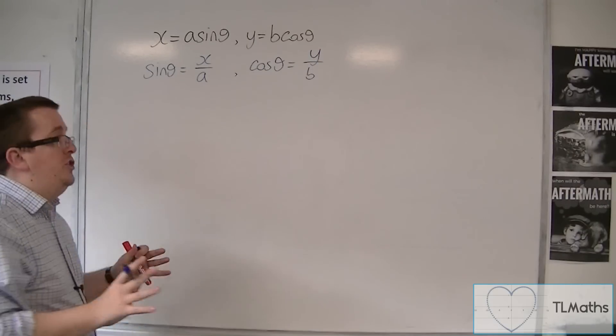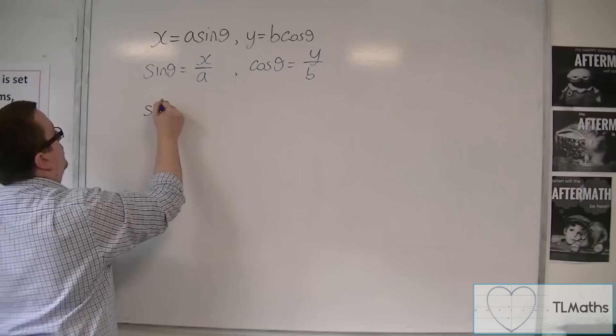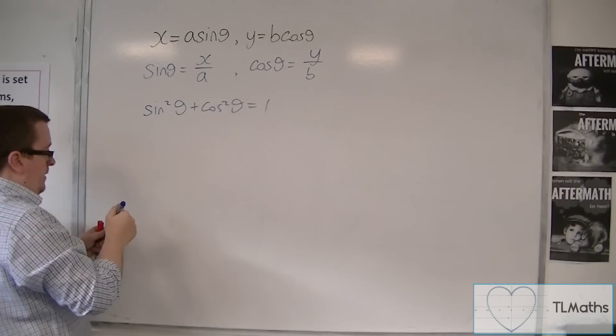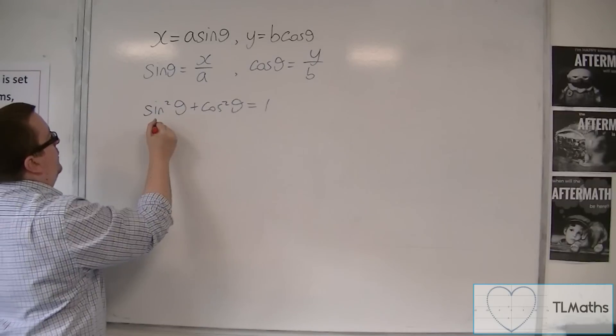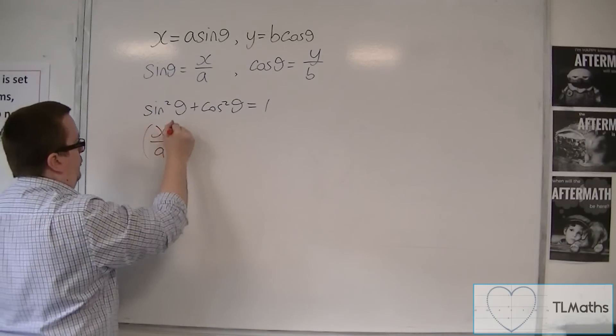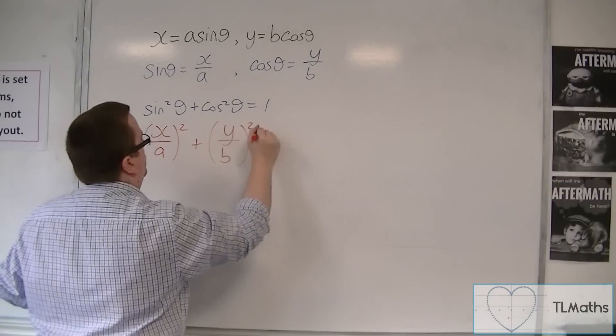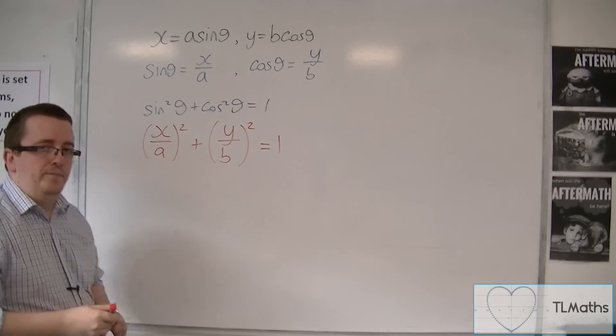Now I can substitute these into sine squared theta plus cos squared theta equals 1, the trig identity. So we're going to get X over A squared plus Y over B squared is equal to 1.